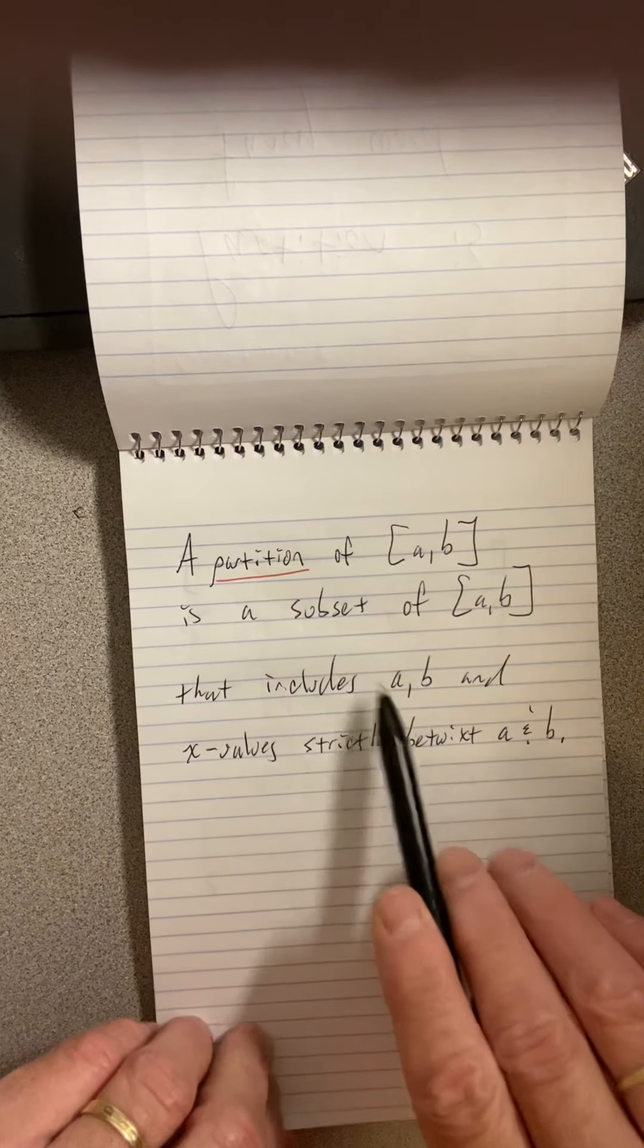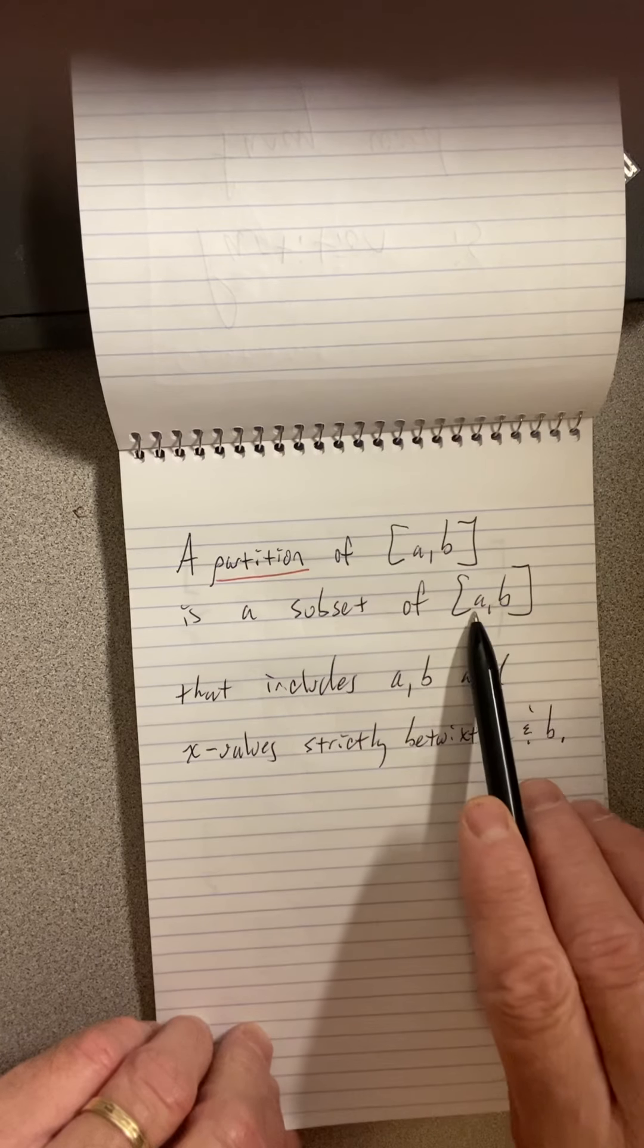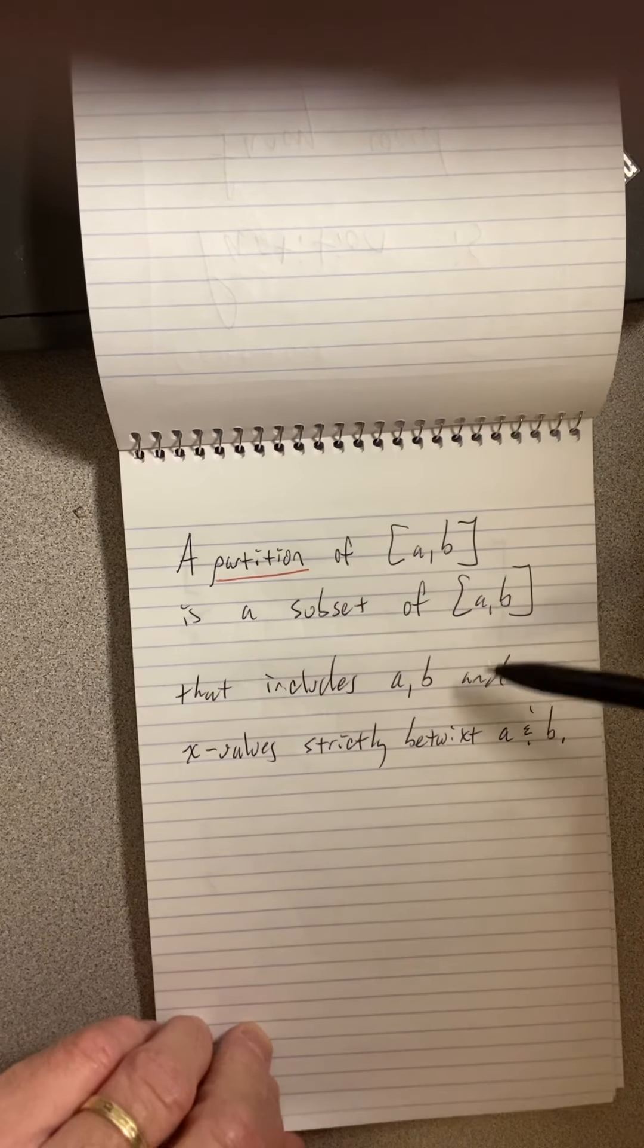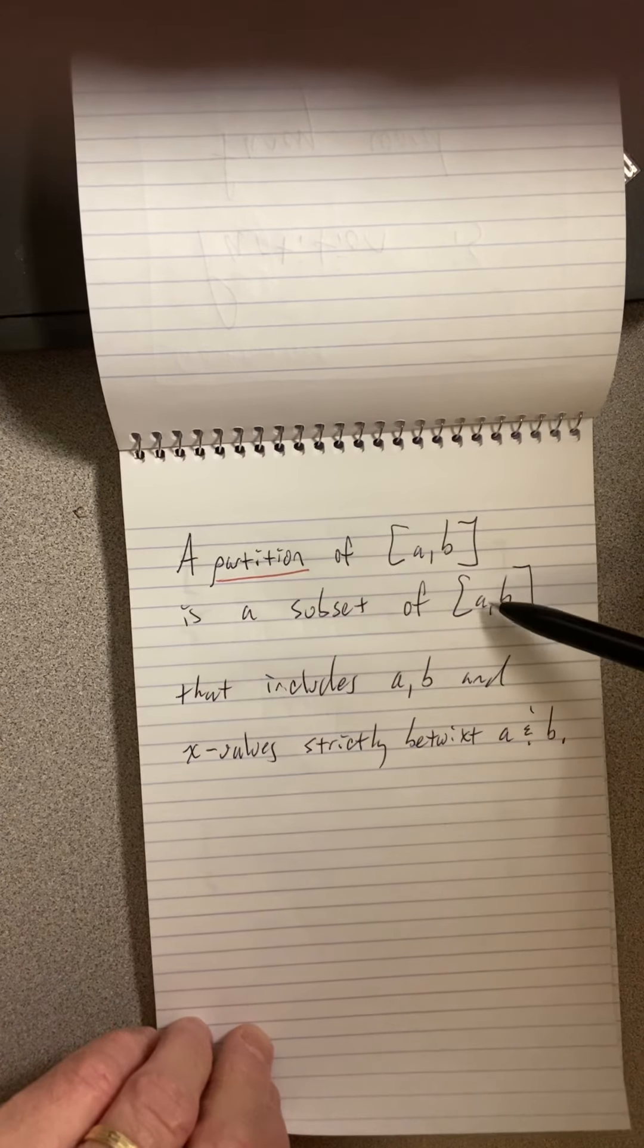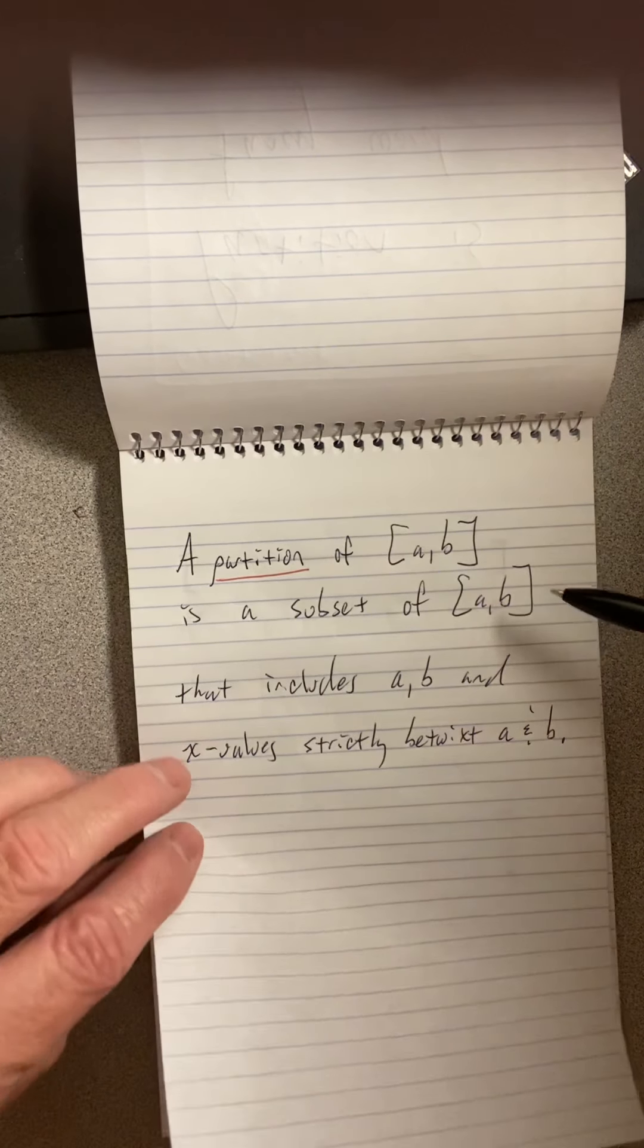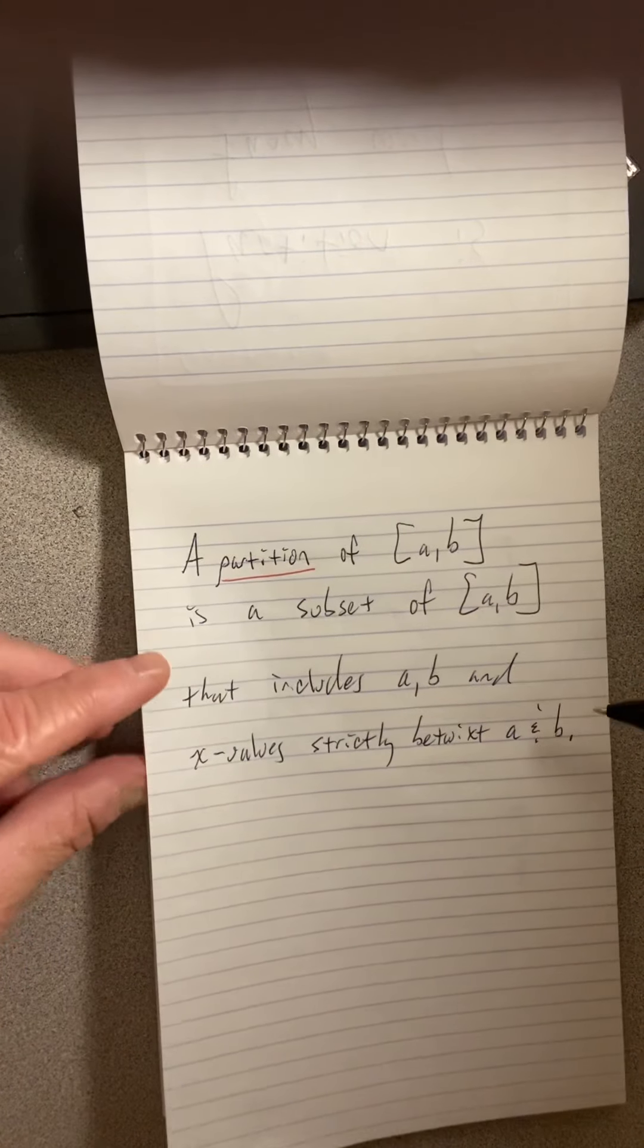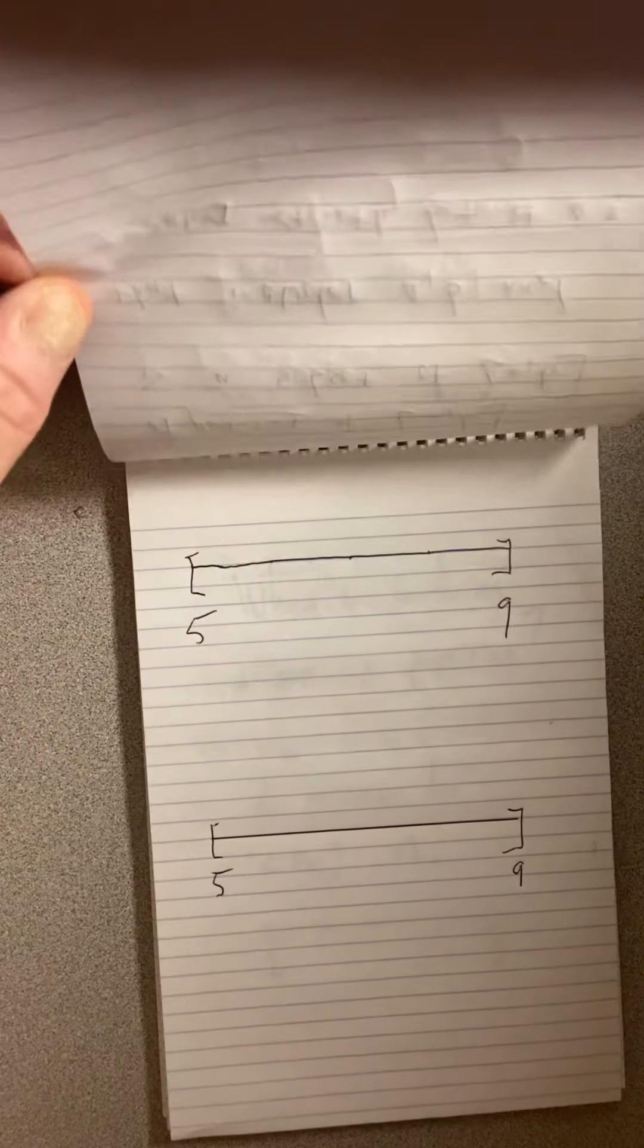This subset includes a, the initial term, and b, the very last term, and x values strictly betwixt a and b. So that's what a partition is, just some subset of this. That's pretty easy. Let's do an example.